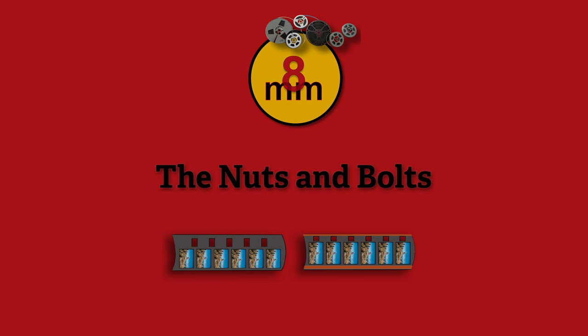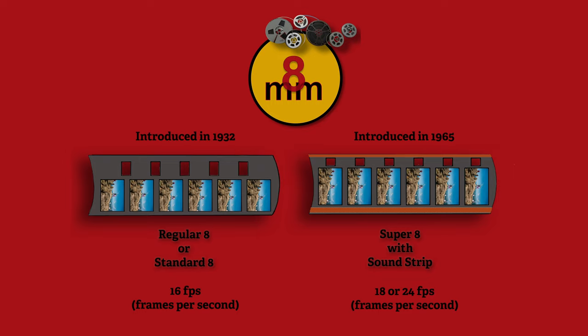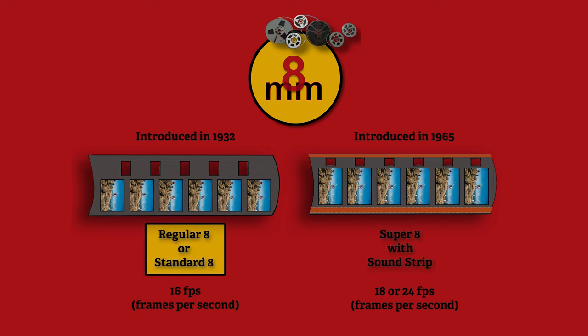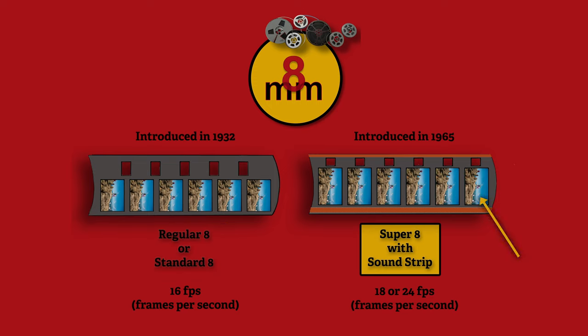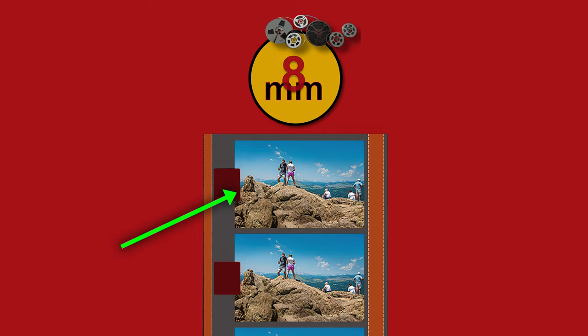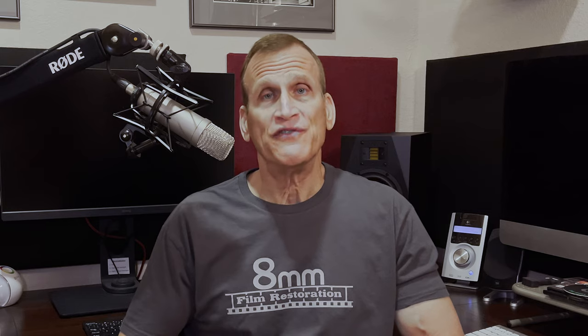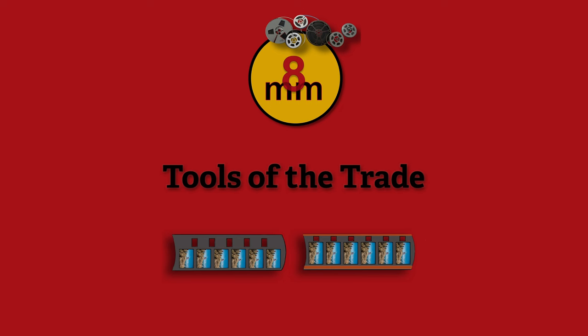Now let's get down to the nuts and bolts. We're going to work with only two types of film — they kind of look the same but they're not. It's the same size film, but one is regular 8 (also known as standard 8) and the other is super 8. Standard 8 has a larger sprocket and smaller aspect ratio; super 8 has the opposite. I also included a magnetic stripe for sound so you could see what that looks like on the film.